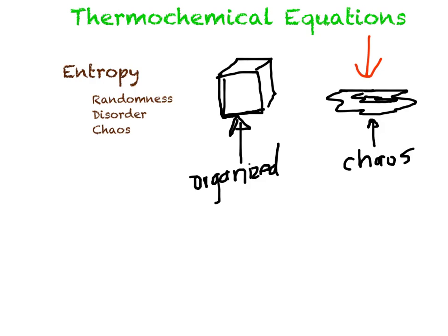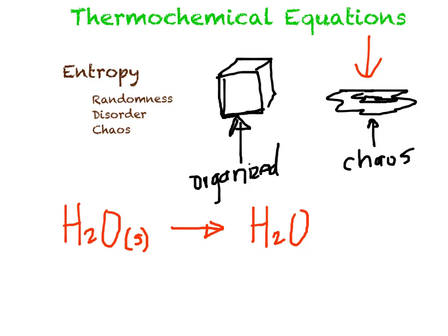Let's make this look like a little chemical system. We have H2O in solid state — that's what the 's' stands for — and on the other side, the same H2O but now in the liquid state, that's an 'l'. This chemical system increased the entropy because you have a lot more disorder and chaos in the liquid state than in the solid ice state.